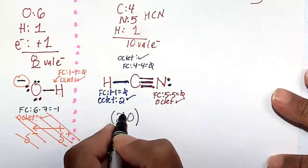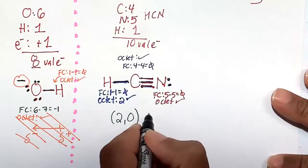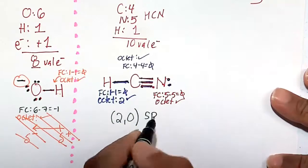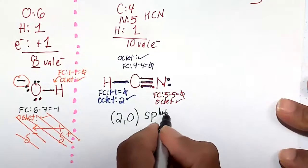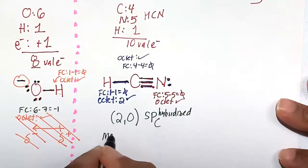Hybridization. How will we get to two bonds? One single, one triple. We're going to take one from S and one from P. So this is an SP hybridized carbon. The molecular geometry is linear.